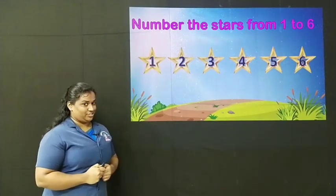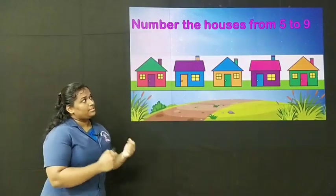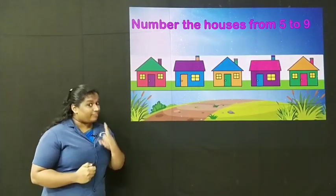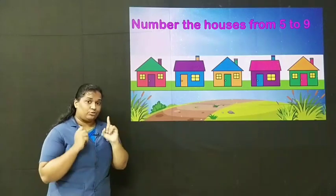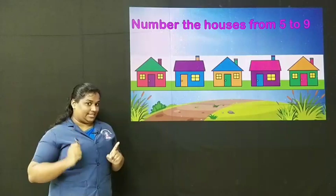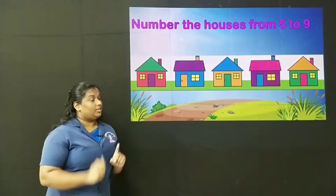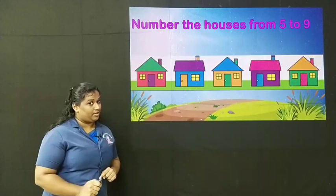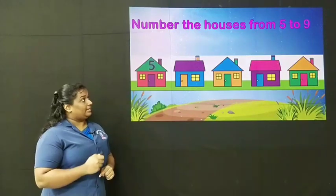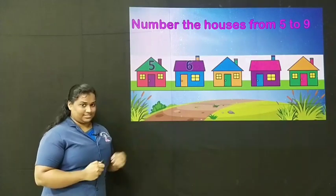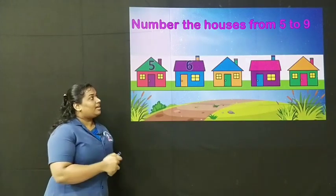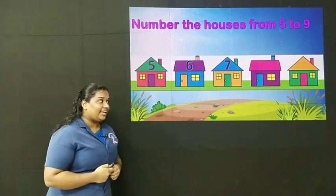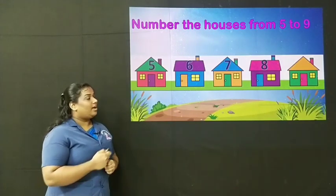Let's solve one more question. Number the houses from 5 to 9. So you have to number these houses from 5 to 9. 5 to 9 — do we have to count forward or backward? Yes, again we have to count forward. So count forward from 5. The first house gets number 5, the second house gets number 6, the third house gets number 7, the next house gets number 8, and the last house gets number 9.